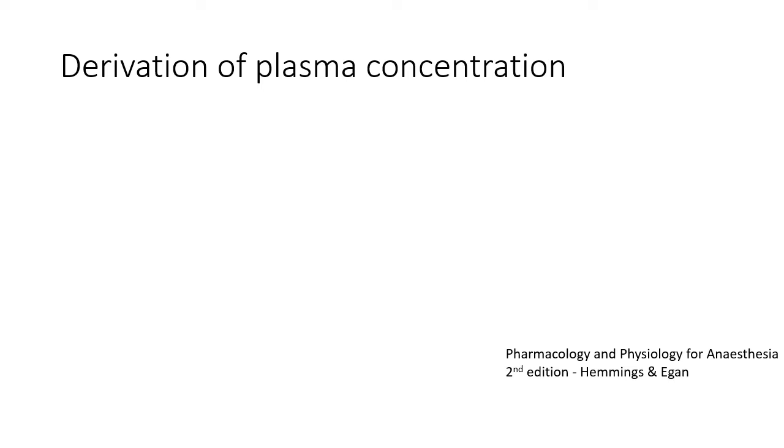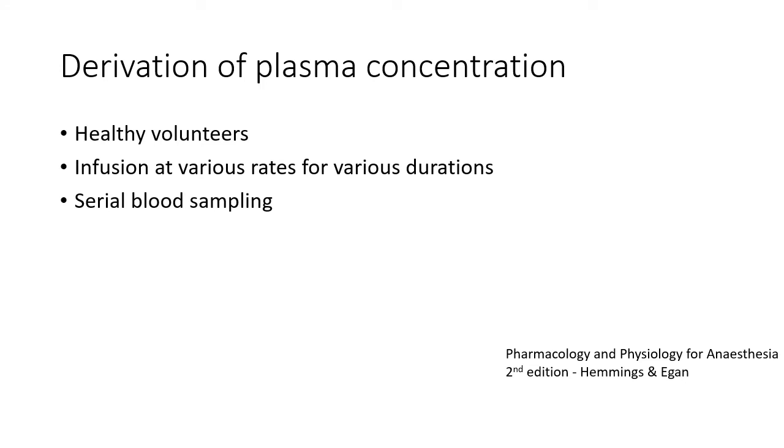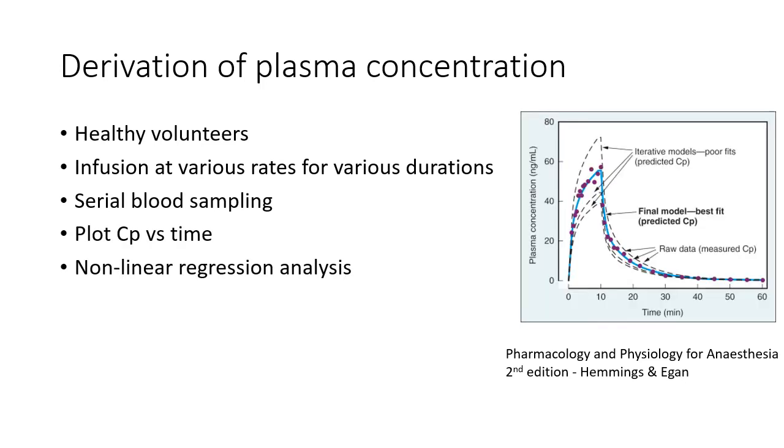The relationship between the patient parameters and the infusion parameters has been figured out by experiments. In those experiments, a small number of healthy volunteers were administered propofol infusions for variable durations. Serial blood sampling was performed. A concentration versus time curve was constructed, and non-linear regression analysis was used to derive an equation for the curve constructed, as well as rate constants and compartment volumes.